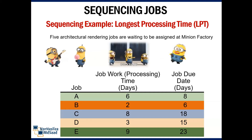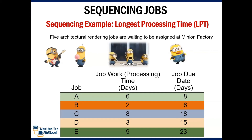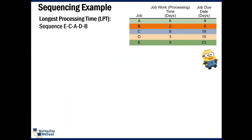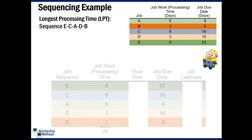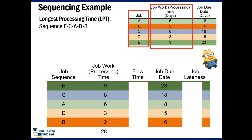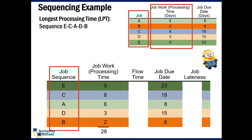Jobs will be assigned a letter in the order they arrive: A, B, C, D, and E. For the Longest Processing Time rule, we need to rearrange the job sequence according to the work processing time. The highest is A, which is 9. Next: C, A, D, and B.